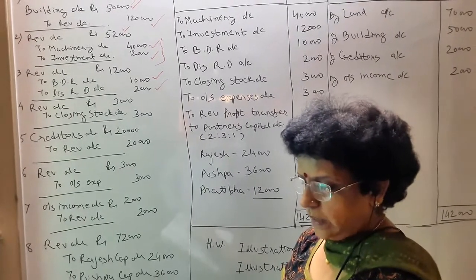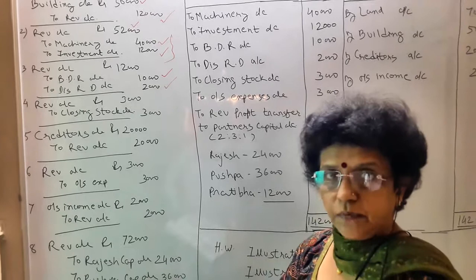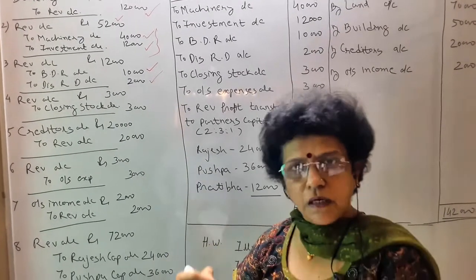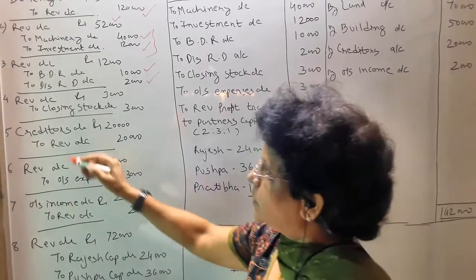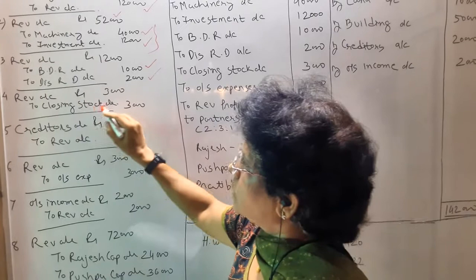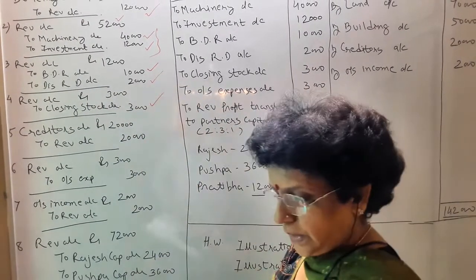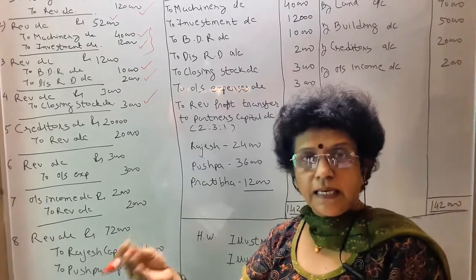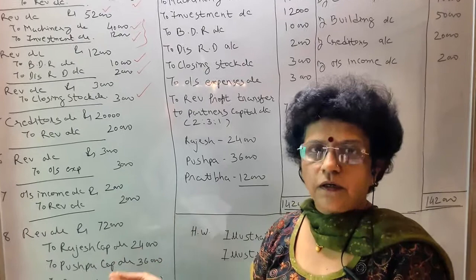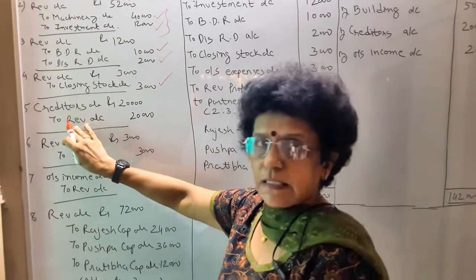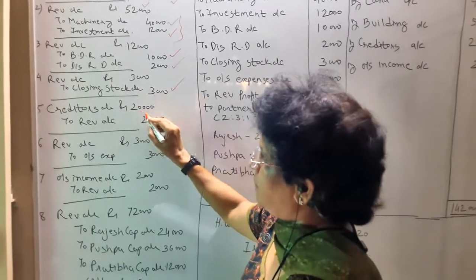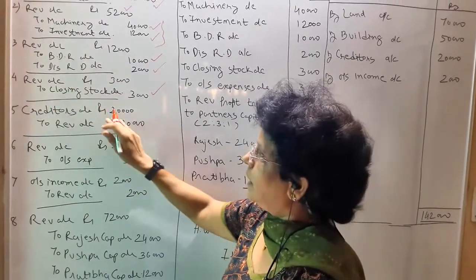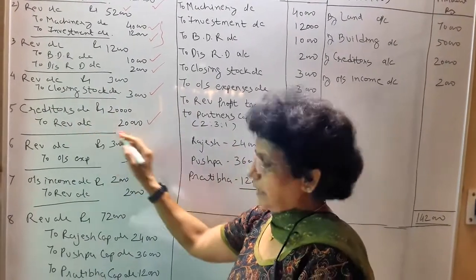The fifth adjustment: the stock value of 15,000 rupees is to be reduced by 20%. 20% of 15,000 comes to 3,000. Again it is a reduction in value, so the asset is to be credited and revaluation is to be debited. So revaluation account debit, closing stock account credit by 3,000 rupees. Then, an amount of 20,000 is not to be paid to creditors — that is one gain. Creditors are not to be paid; such a good thing for the business. So it becomes a gain for us and revaluation is to be credited. Creditors account debit, you are reducing your liability — reduction of liability means you debit that liability. Creditors account debit to revaluation account credit, that is 20,000 rupees.